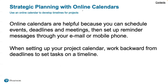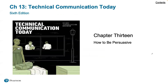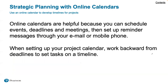With a strategic plan, you want to have it set up with a calendar. An online calendar is a great way to do that — you can schedule events, deadlines, and meetings, and set up reminder messages through your email or mobile phone. When setting up your project calendar, work backwards from the deadlines to set tasks on a timeline. We've talked about that backlog planning before — thinking of the final end state and the dates necessary to support that timeline. Okay, that's it for this chapter. Thank you very much.